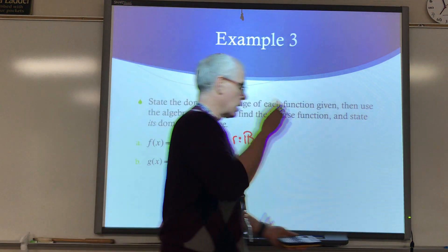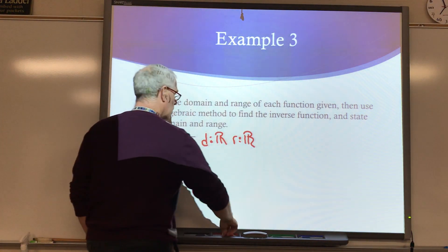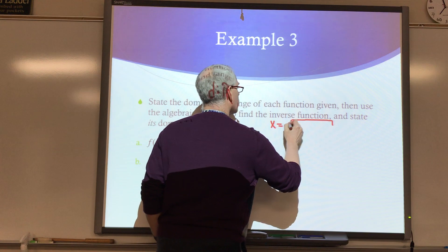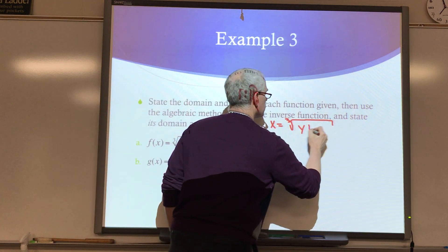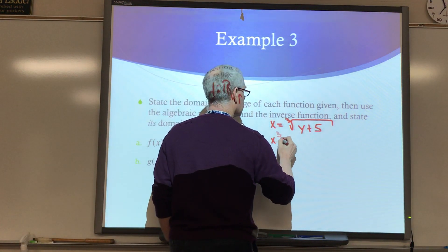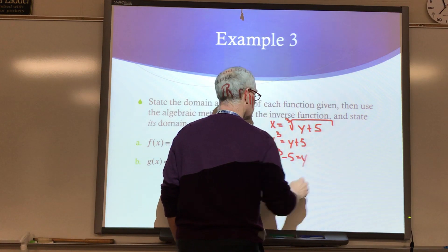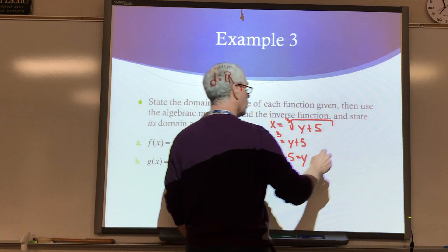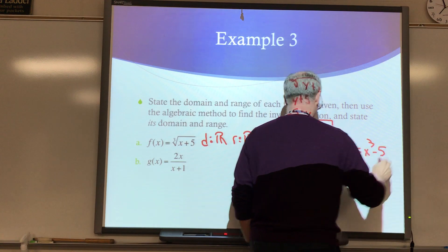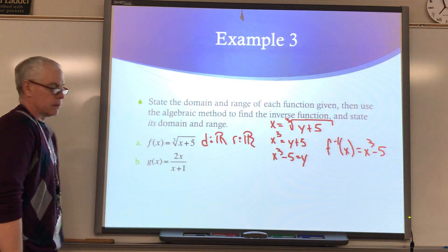The algebra then is to switch this to a Y, and then switch around X and Y. So I write X equals the cubed root of Y plus 5. Then solve for Y: cube both sides, subtract 5, and replace Y with F inverse. So F inverse of X equals X cubed minus 5. That's the inverse algebraically, and the domain and range stay all real numbers because we interchange them.